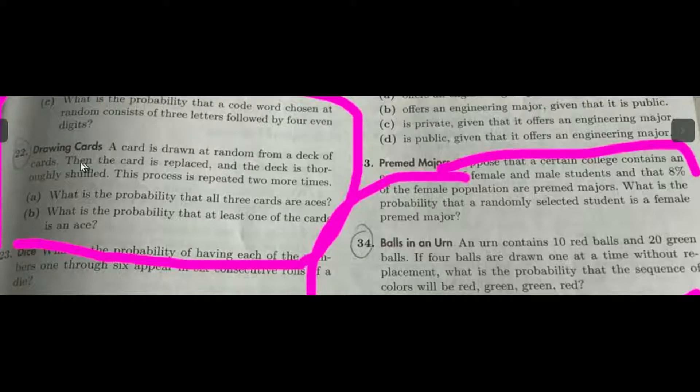There are only two problems here to be solved: number 22 and number 34. Number 22 is about drawing cards. A card is drawn at random from a deck of cards, then the card is replaced and the deck is thoroughly shuffled. This process is repeated two more times. Part A of that question is, what's the probability that all three cards are aces? Part B is, what's the probability that at least one of the cards is an ace?